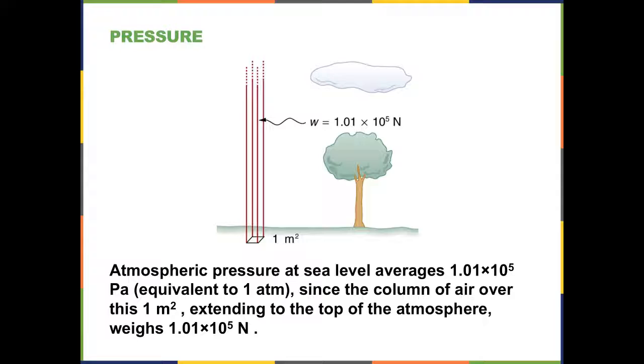And thus the atmospheric pressure turns out to be 1.01 times 10 to the fifth newtons per square meter, or 1.01 times 10 to the fifth pascals, since you have this enormous column of air that is one square meter in diameter.